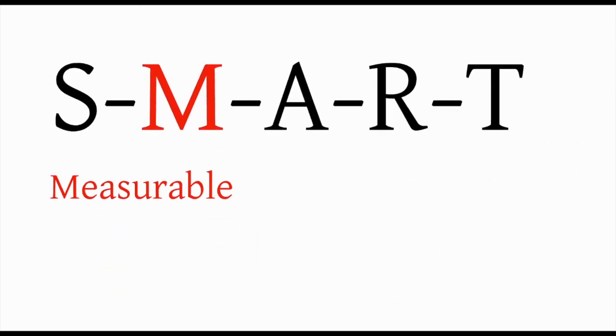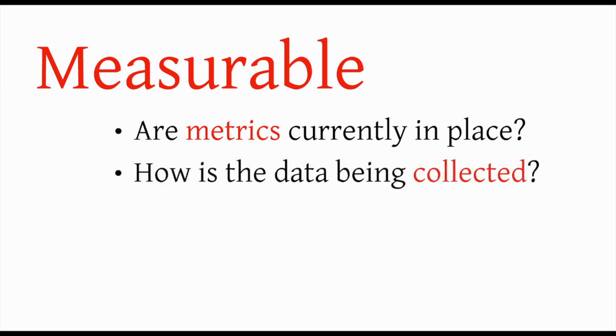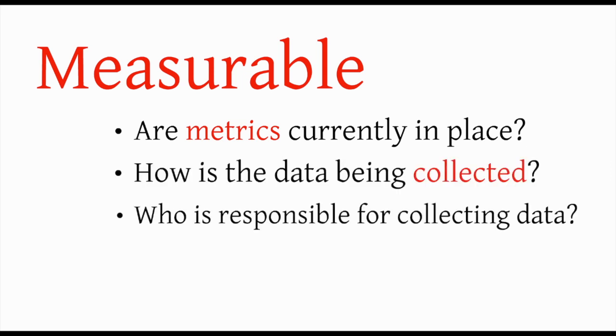The next letter in the SMART Project Charter is M, and it stands for Measurable. In this area, you define how the problem is currently being measured. Any metrics that are being used along with the associated systems or documents used to track the metrics are identified. Some good questions to ask are: are there any metrics currently in place to measure how well the process is doing? How is the data being collected? Who on the team will be responsible for getting the data?